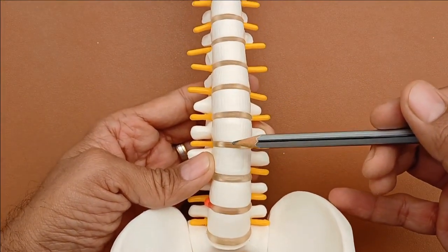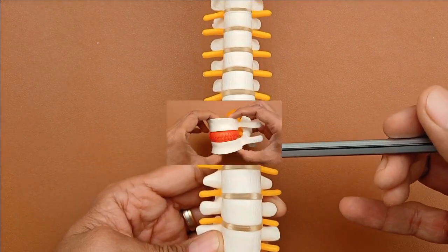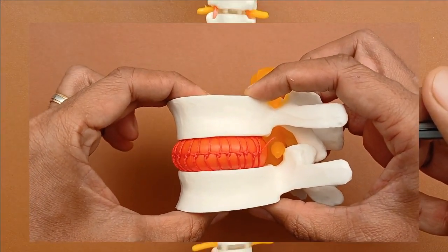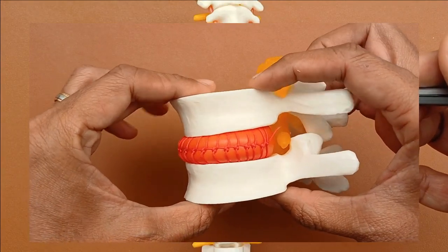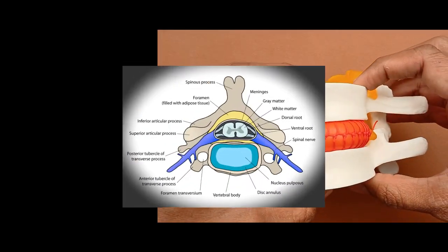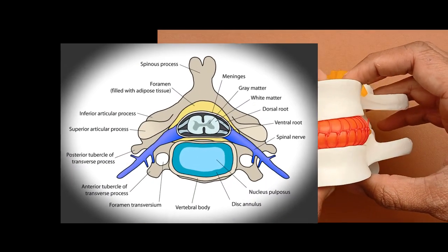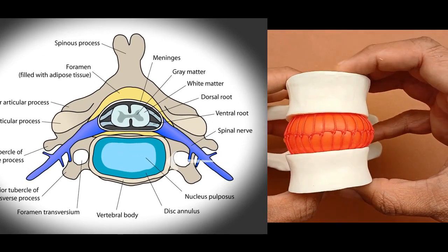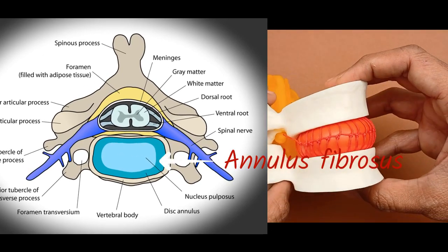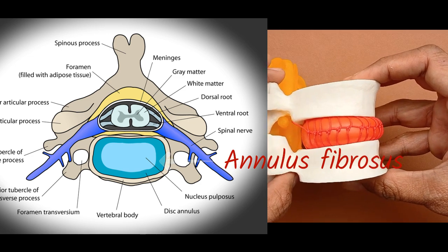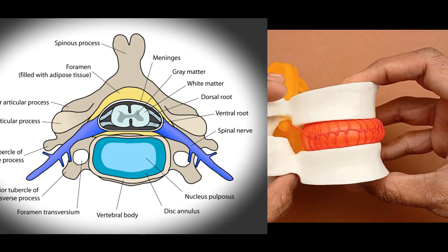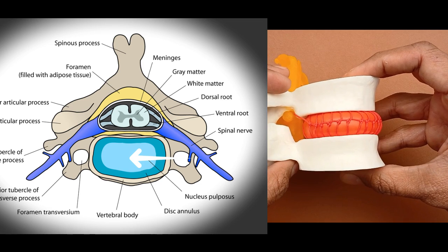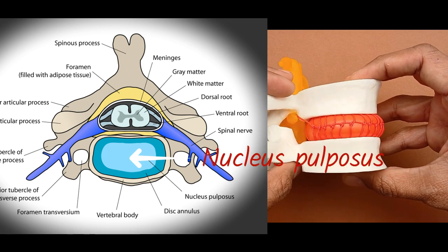Intervertebral discs are cushion-like structures located between vertebrae in our spine. Each disc consists of an outer layer termed the annulus fibrosus, which is a fibrocartilage, and in the central core there is a gel-like substance termed the nucleus pulposus.